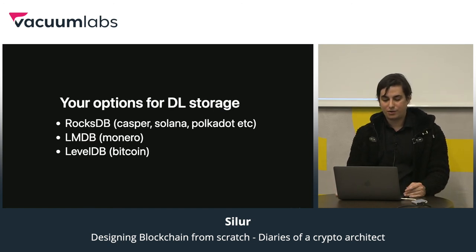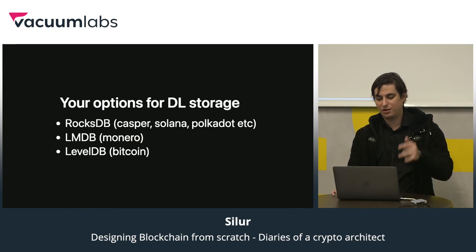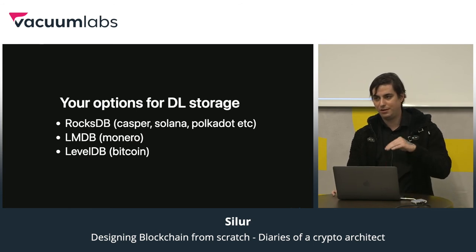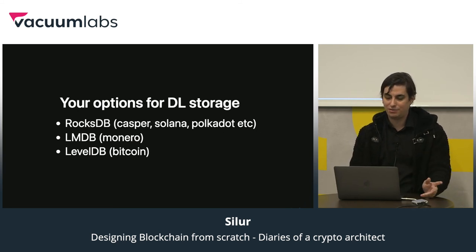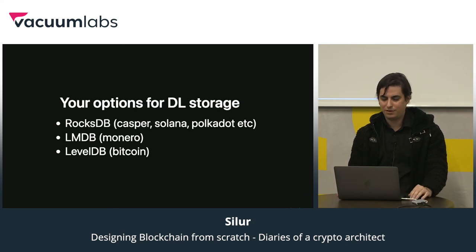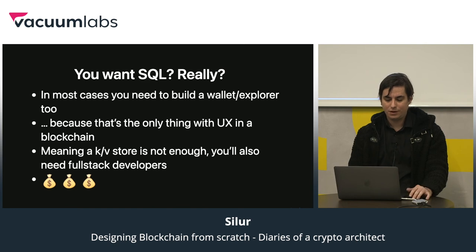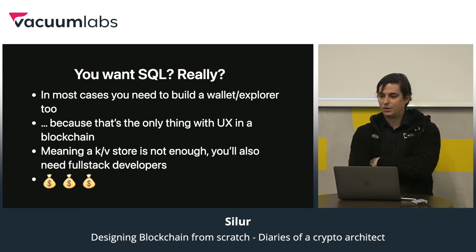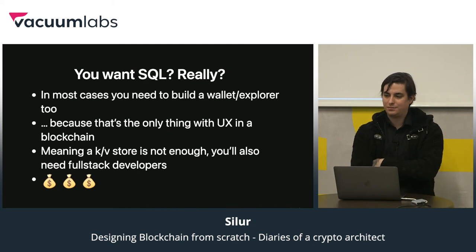For database options, I personally go for RocksDB — a fork of LevelDB (used in Bitcoin, made by Google), forked by Facebook, which is even faster and better. I also note LMDB because it's memory-mapped, which is very interesting, and the best example I have for that is Monero.